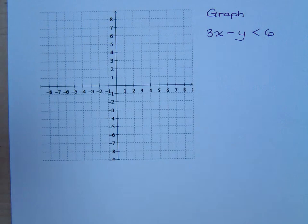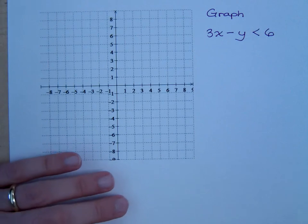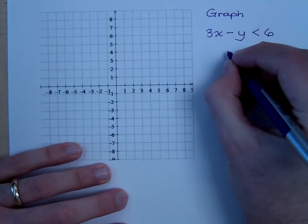Okay, you know it's dashed, but I think somebody wanted to get y by itself first. How do you get y by itself? So subtract the 3x, what do I have now?